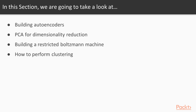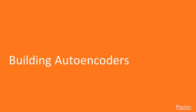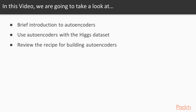So this is the plan for this section — let's begin. This is the first video of this section and here we talk about autoencoders and how to build them using TensorFlow. First we will give a brief high-level introduction to autoencoders, then we will use autoencoders with the Higgs boson dataset, and finally we will review the recipe for building autoencoders.